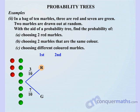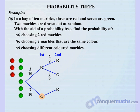If the first marble drawn is red, we remove it from the bag. For the second draw, there are now only two reds left out of nine marbles — so the chance of red is 2/9 and green is 7/9. Putting the red marble back: if the first marble was green instead, removing it leaves three reds out of nine — so the chance of red on the second draw is 3/9, and green is 6/9.